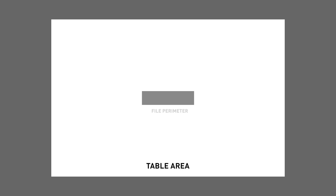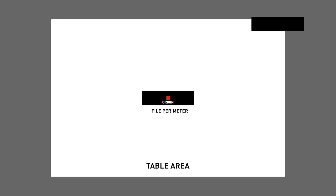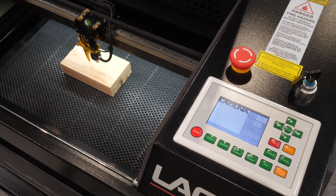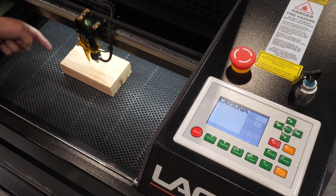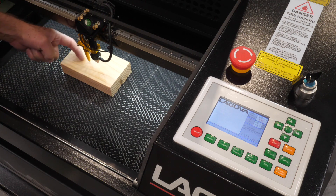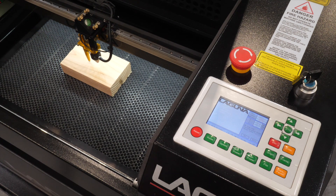The X Y slop over has more to do with the table area and where the last origin was set — that's the red dot. In framing, if the origin was last set to an upper corner and the file doesn't have enough room, the gantry can't move over the entire file, so you'll see the X Y slop over message. If the origin is set in the wrong place, we'll need to set a new machine origin for the current file, which is easy. We'll hit escape a couple of times to proceed.